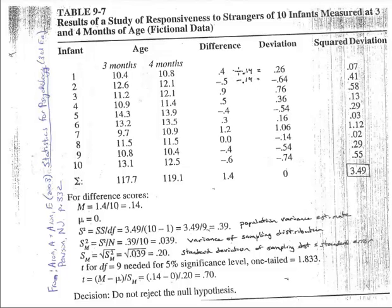So we subtract 0.14 from 0.4 and we get a deviation of 0.26. We subtract 0.14 from negative 0.5 and we get a deviation of negative 0.64. These deviation scores are the same types of deviations that we calculate when looking at traditional variance and standard deviation calculations. Once we have generated all of these deviations, as with all deviation scores around the mean, they will sum to zero.